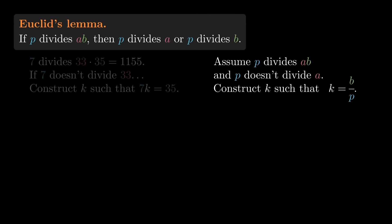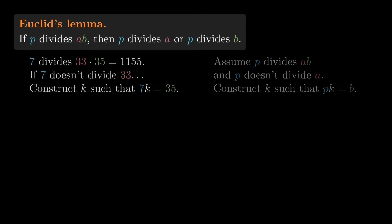It's tempting to say, sure, just let k be b over p. But remember, we don't know that b is divisible by p. That's what we're trying to show. In our example, how can we get k in a way that only uses that 1155 is divisible by 7, since that's what we know?